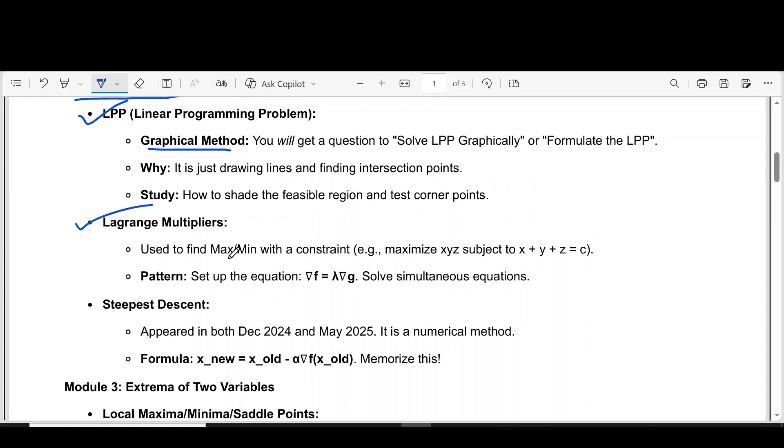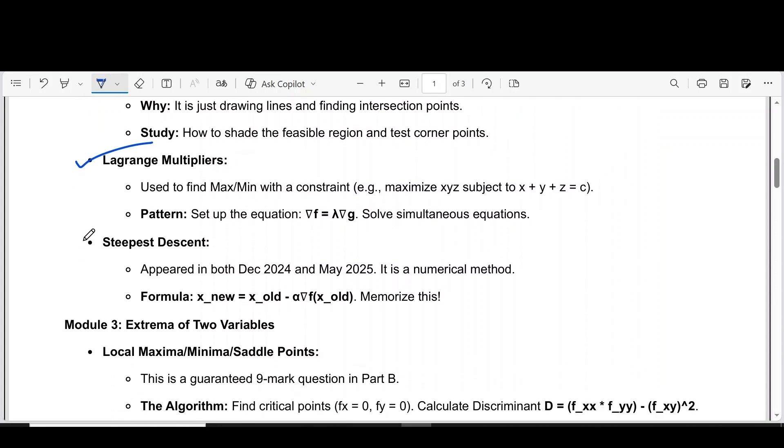it is Lagrangian multipliers used to find max or min with a constraint. Then third question, it is steepest descent.